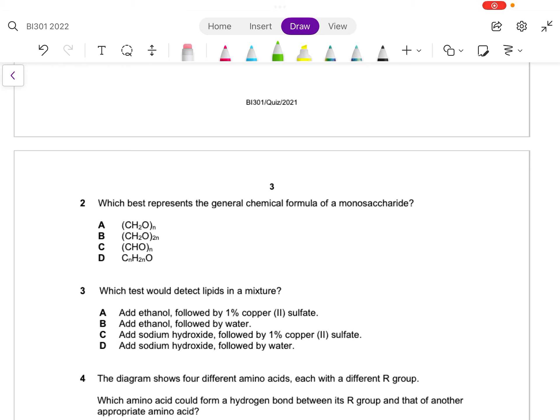Next, let's go to question 2. Question 2 asks which best represents the general chemical formula of monosaccharides. The answer would have to be A. This one you can refer to your notes - this is the general formula of a monosaccharide.